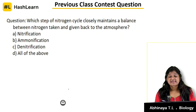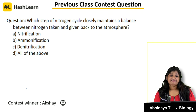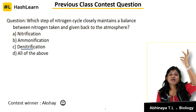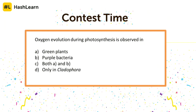Which step of the nitrogen cycle maintains a balance between nitrogen taken and given back to the atmosphere? Many of you came up with correct and wrong answers. The correct answer is denitrification — it is the one which maintains the balance between nitrogen absorbed and given back to the atmosphere. Now the contest question: oxygen evolving during photosynthesis is observed in which — green plants, purple bacteria, both, or only in Cladophora? Think about photolysis of compounds which can give up oxygen.